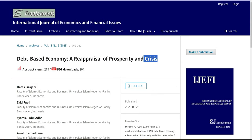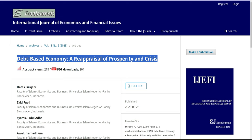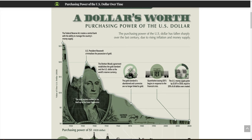This chart shows that we're in a debt-based economy and since then the dollar just kept losing its purchasing power tremendously. The causes were rising inflation and money supply — the more inflation, the less purchasing power the dollar had.